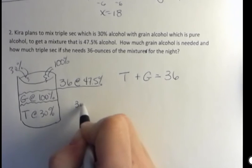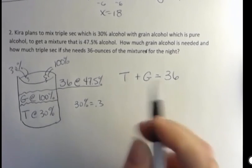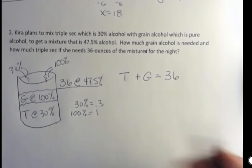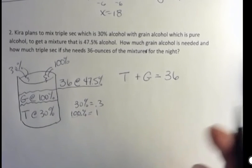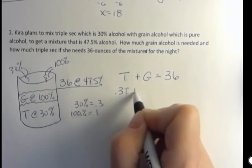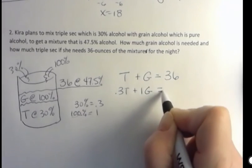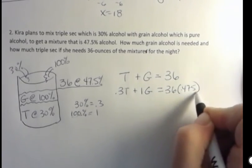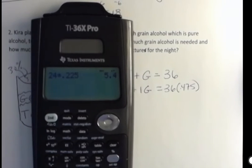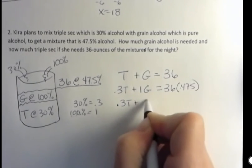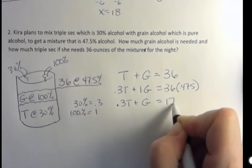So 30% equals 0.3 because we're moving that tube to the left. 100% equals one. So I have 0.3 times T and then one times G, which I don't even need to write, but I'm just going to for now. And then 36 times 0.475. That's our percentage that we're shooting for. So let's make that simpler. 36 times 0.475 is 17.1. So I have 0.3T plus G equals 17.1.